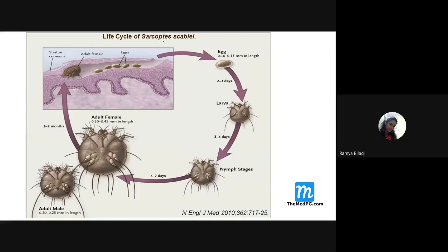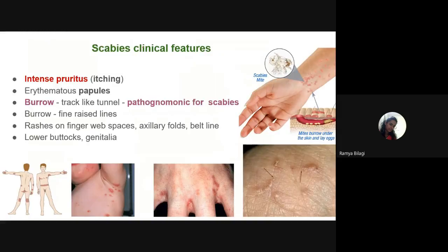The life cycle of the mite: the female goes below the epidermis, creates a burrow, and lays eggs along the path. The eggs hatch to form larvae after 3 to 4 days, larvae convert to nymphs, and after another 4 to 7 days nymphs become adult females. The adult female then exits the burrow to infect other parts of the skin, continuing the life cycle.